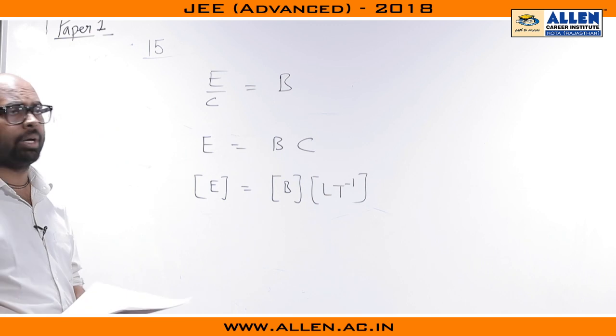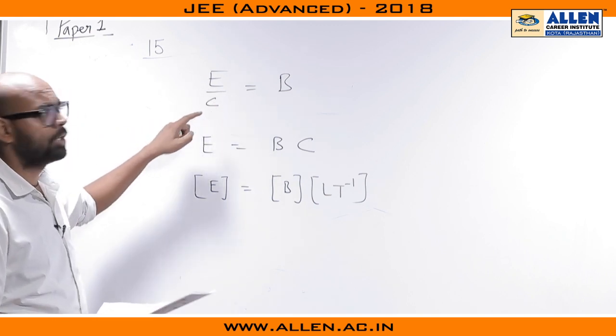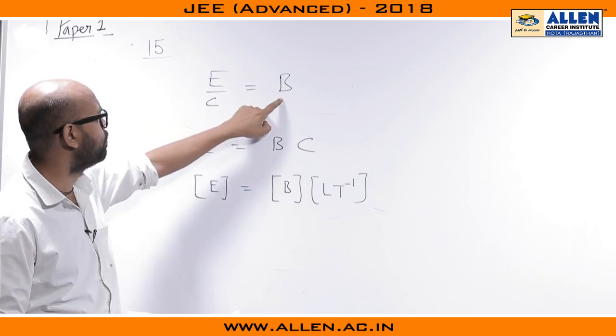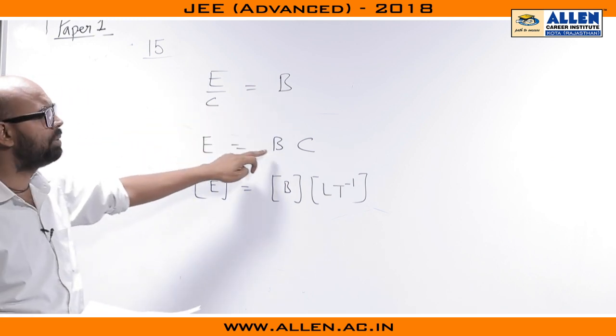We know in electromagnetic wave E by B is the velocity of light, so c is the velocity of light. We can write down E by c equals B, so E equals B into c.